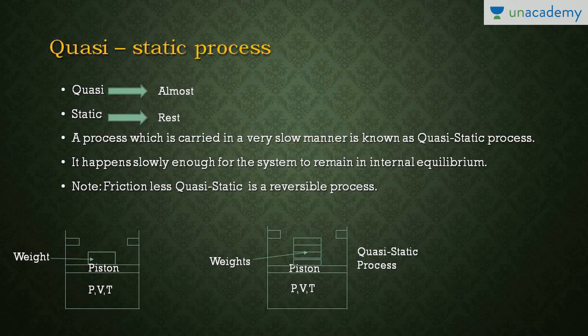There is a term in thermodynamics: quasi-static. Quasi means almost and static means rest — the process is done in a very slow manner. A process which is carried out in a very slow manner is known as a quasi-static process. For example, consider a piston-cylinder arrangement. This is the piston, and this is the system having pressure P, volume V, temperature T, and there is a weight kept on the piston. As soon as the weight is removed, the piston will move up — this is an instantaneous process.